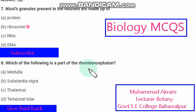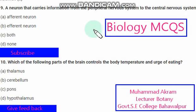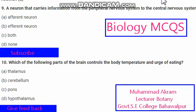Which of the following is part of the rhombencephalon? The right option is option A — Medulla. A neuron that carries information from the peripheral nervous system to the central nervous system — the right option is option A, afferent neuron.